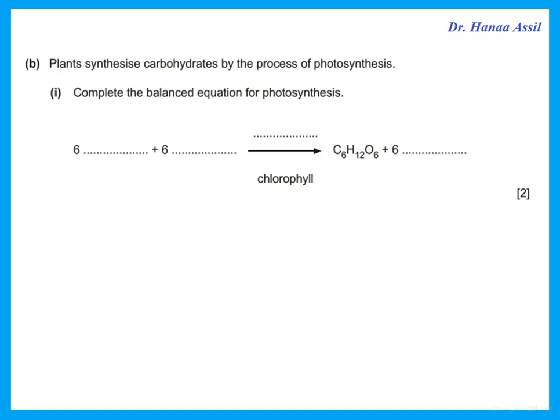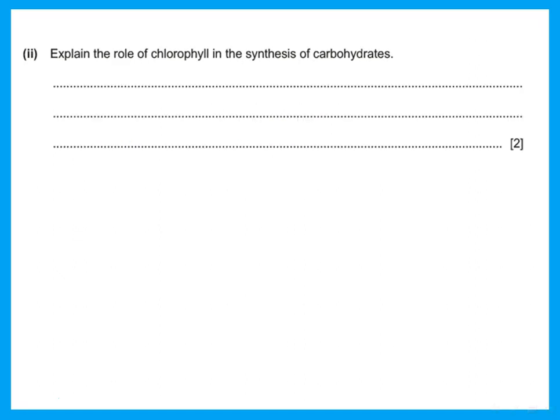Plants synthesize carbohydrates by the process of photosynthesis. Complete the balanced equation for photosynthesis. You are required to know the balanced equation and the word equation. Carbon dioxide and water react to give glucose plus oxygen, in the presence of light or sunlight written on the arrow.